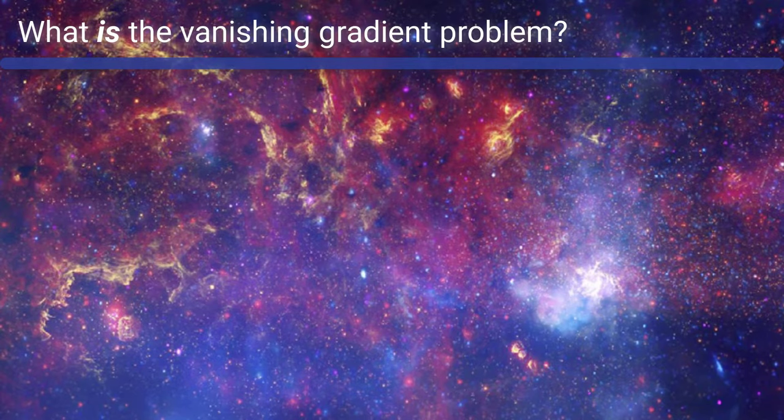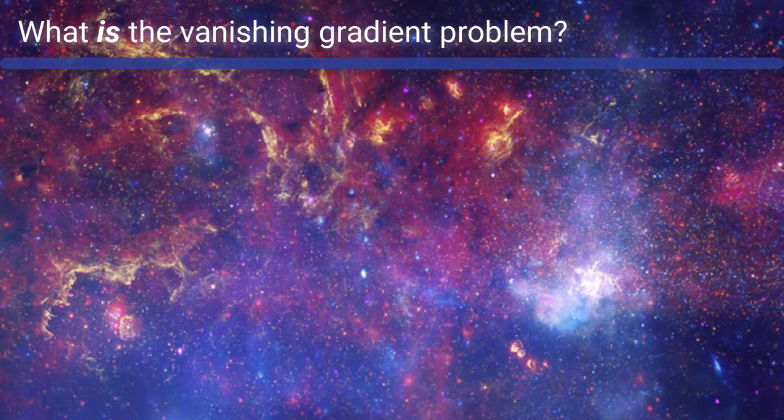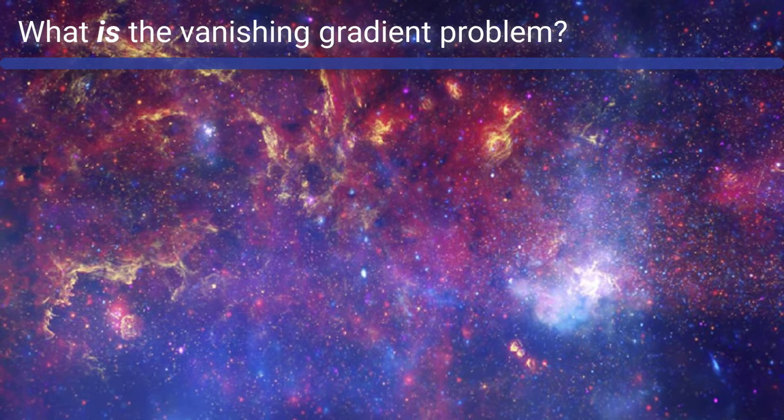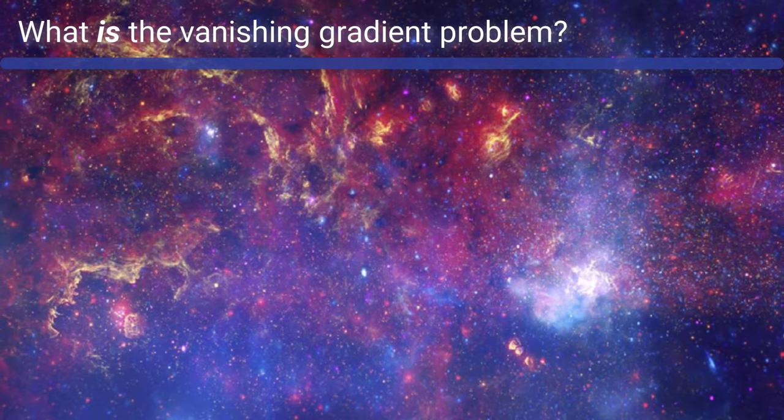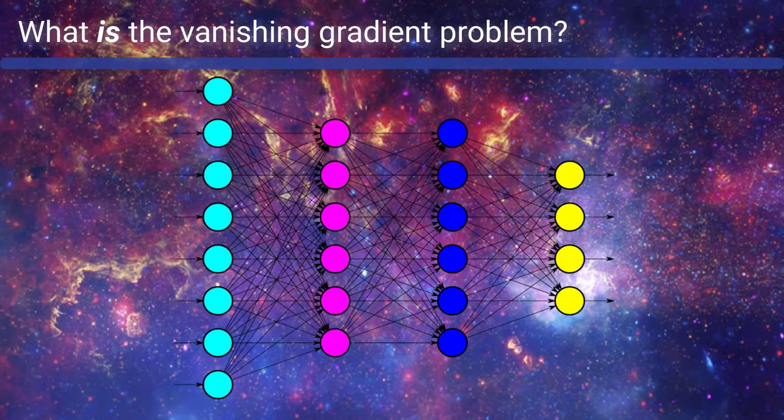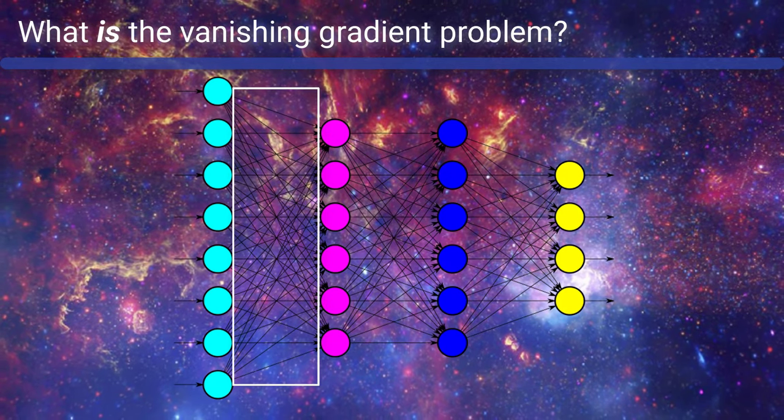So what is the vanishing gradient problem? We'll first talk about this kind of generally, and then we'll get into the details in just a few moments. In general, this is a problem that causes major difficulty when training a neural network. More specifically, this is a problem that involves the weights in earlier layers of the network.